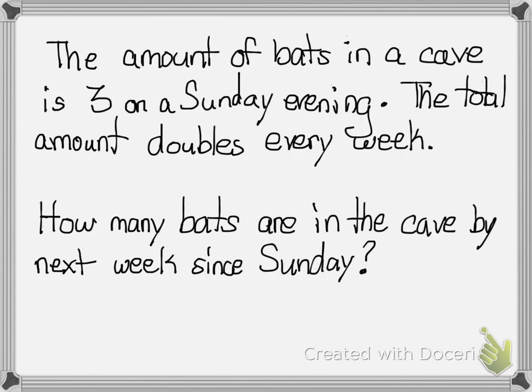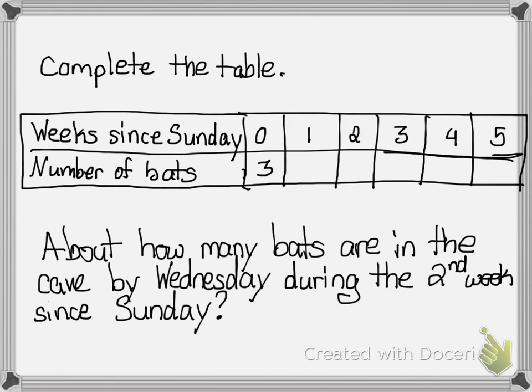Let's think about it. We start off with three. If three doubles, it's gonna have to be three plus three, which is six. So there's gonna be six bats come the following week after that Sunday. Now let's fill out this table. We started off with three, it doubles and becomes six. When six doubles, it becomes 12. When 12 doubles, it becomes 24. I know I'm saying doubles, but basically I'm multiplying times two.